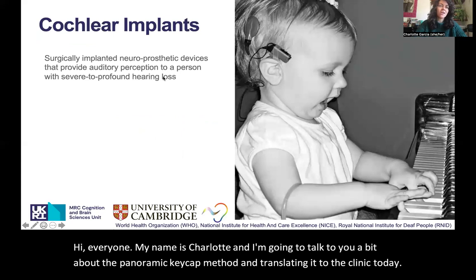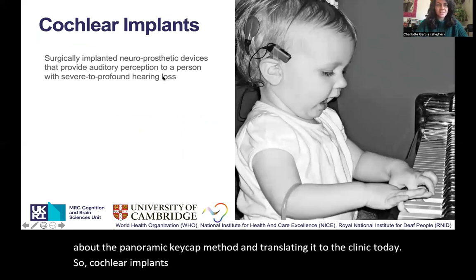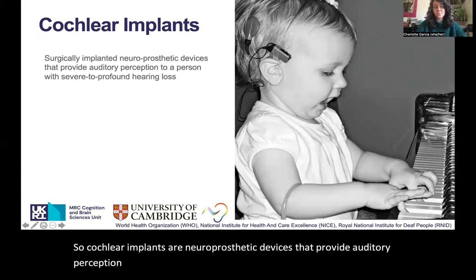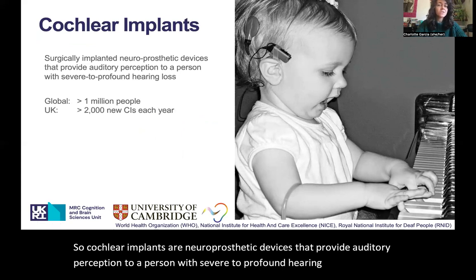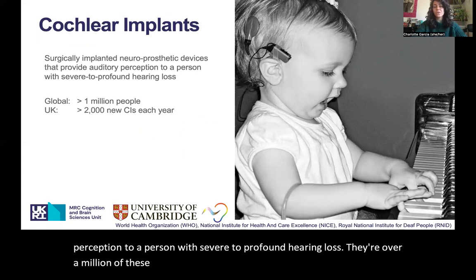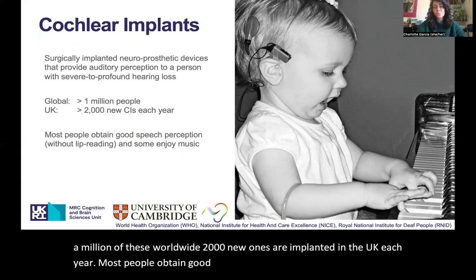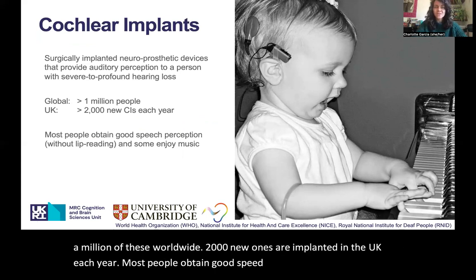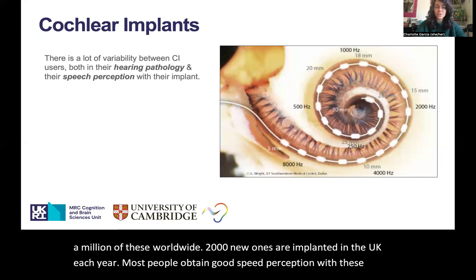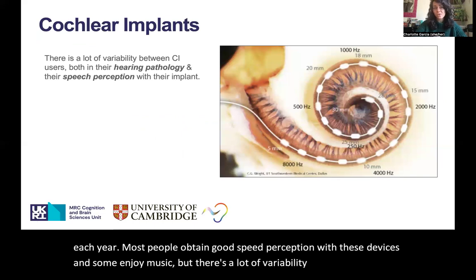Cochlear implants are neuroprosthetic devices that provide auditory perception to a person with severe to profound hearing loss. There are over a million of these worldwide, and 2,000 new ones are implanted in the UK each year. Most people obtain good speech perception with these devices, and some enjoy music, but there's a lot of variability between users, both in their hearing pathology and their speech perception.